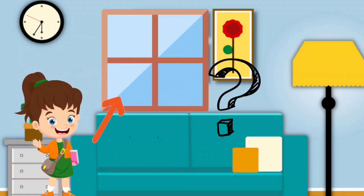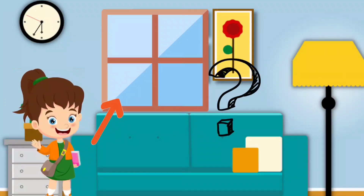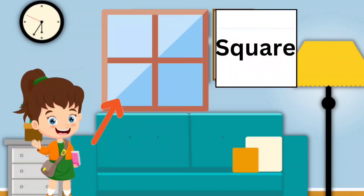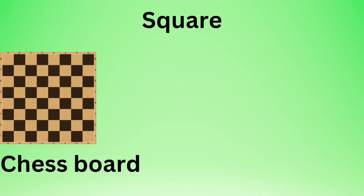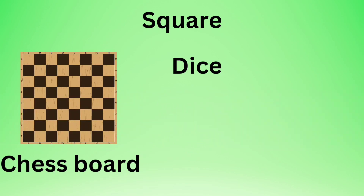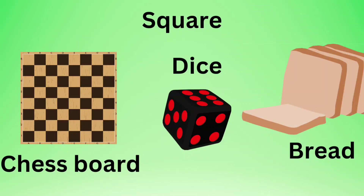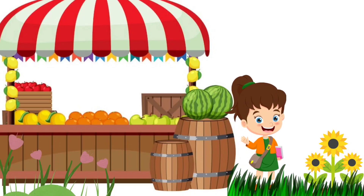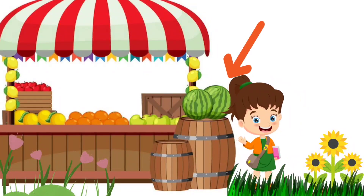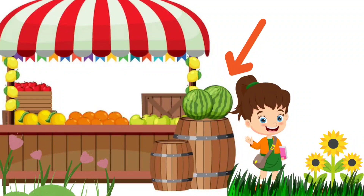Hi, we are in my living room. Look, there is a window. What shape is it? Yes, it's a square shape. Some examples: chess board, dice, bread. These all are square shapes.